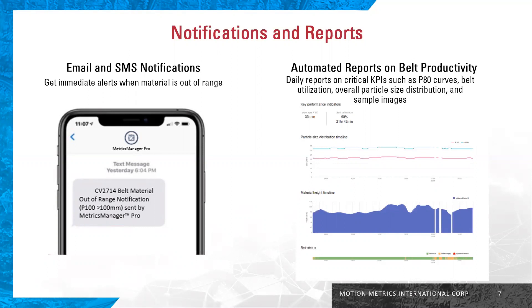Metrics Manager Pro also sends automated reports on belt productivity. These daily reports show critical KPIs such as the P80 curves, belt utilization, overall particle size distribution, and sample images.